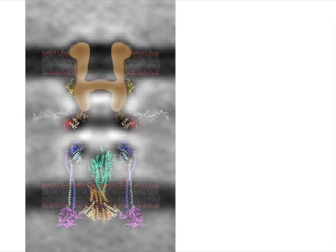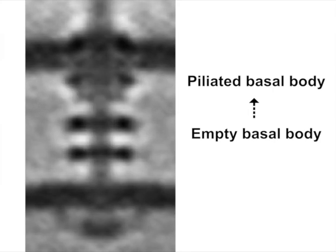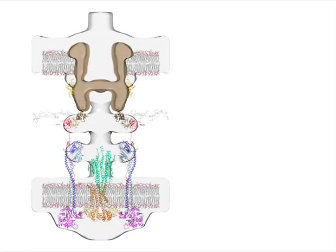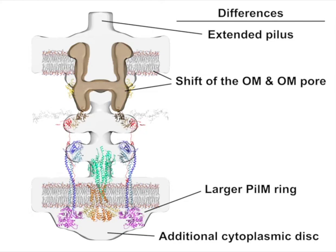We next wanted to generate an architectural model of the piliated basal body. As before, we used electron cryotomography and subtomogram averaging to determine its overall shape. Morphing from the empty basal body to the envelope of the piliated state and overlaid with the architectural model of the empty basal body, we observed several major differences, including an elongated axial pilus extending through the outer membrane, an upward shift of the outer membrane and outer membrane pore complex, a larger PLC ring, and a new axial cytoplasmic disc at the base. We therefore adapted our model of the empty basal body and added the new components accordingly.